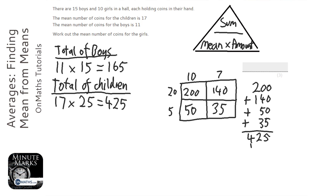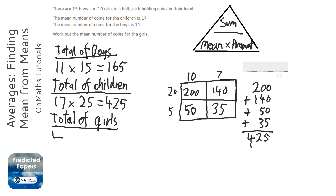So the total of the children is 425, the total of the boys is 165. So therefore the total of the girls is the total total, take away the boys total. So 425 take away 165.